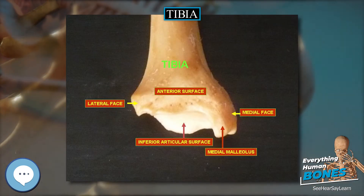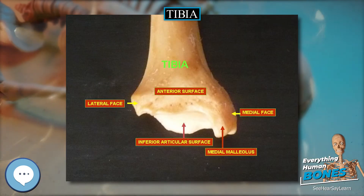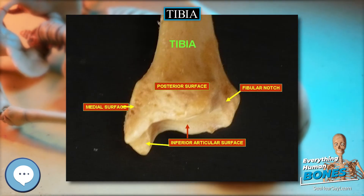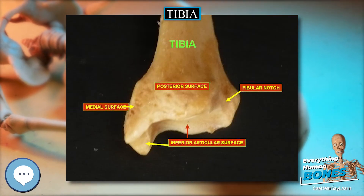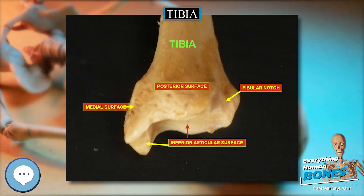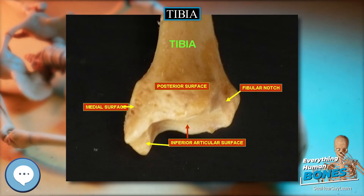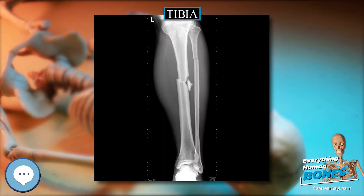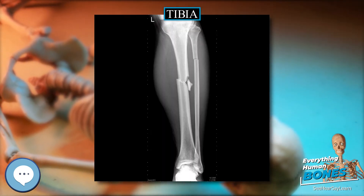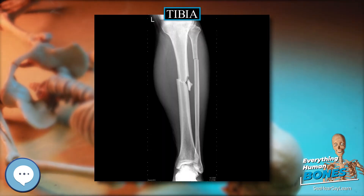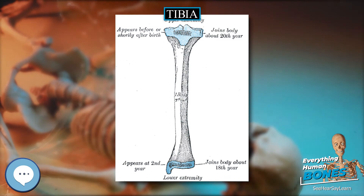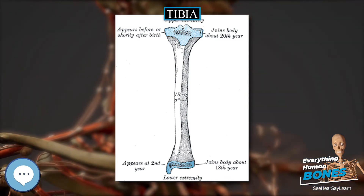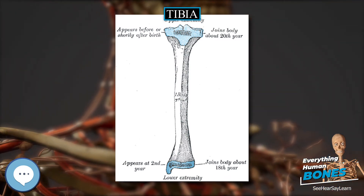Fractures. Ankle fractures of the tibia have several classification systems based on location or mechanism. Blood supply. The tibia is supplied with blood from two sources: a nutrient artery, as the main source, and periosteal vessels derived from the anterior tibial artery.